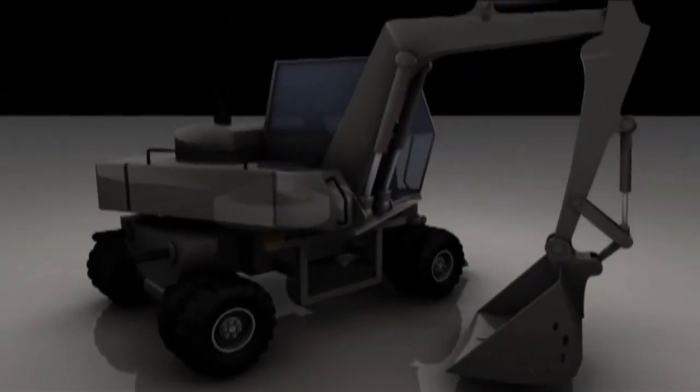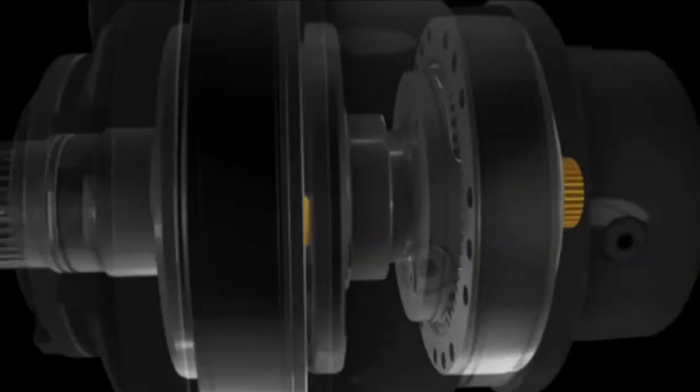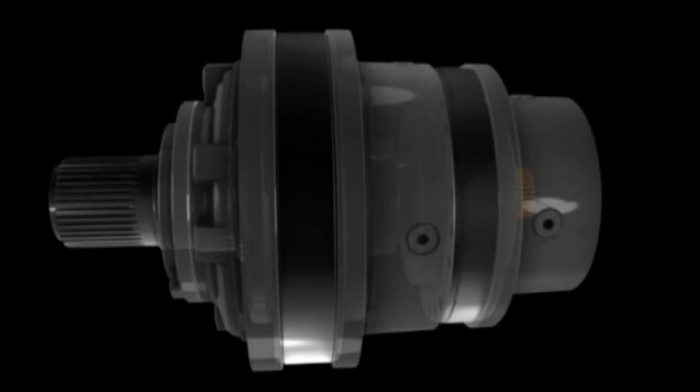In both cases, if we add another stage of planetary reduction, we create what's called a two-stage gearbox, and so on. Gearboxes with fixed ring gear allow us to achieve a reduction ratio of 7000 to 1 or 200 to 1 with rotating ring gear.